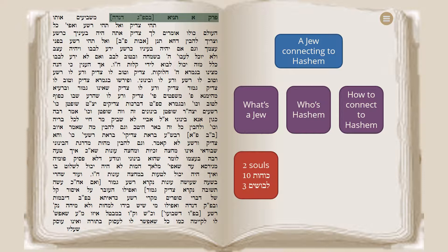The Alta Rebbe will begin by focusing on what is a Yid. Starting with Perak Aleph, the Alta Rebbe will teach that a Yid has two Neshamas — two souls — ten Kochot, and three Levushim. Then the Alta Rebbe will continue and also teach about who is Hashem, and within all of that, we will learn how a Yid is able to connect to Hashem.